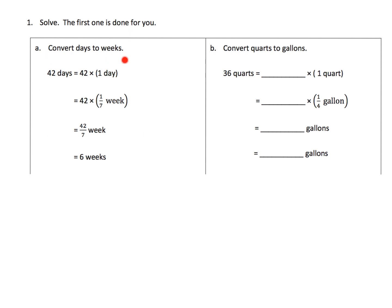Eureka Math has a nice technique for converting days to weeks — it's an algorithmic approach. You take 42 days, and a day is one day, so you have 42 copies of one day. A day is a seventh of a week. You multiply, and then convert that improper fraction into a whole number.